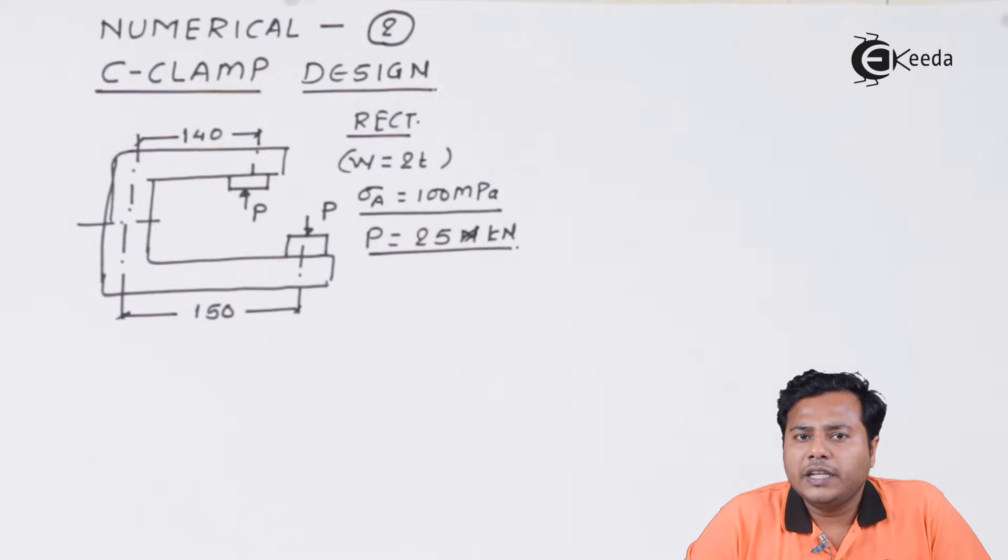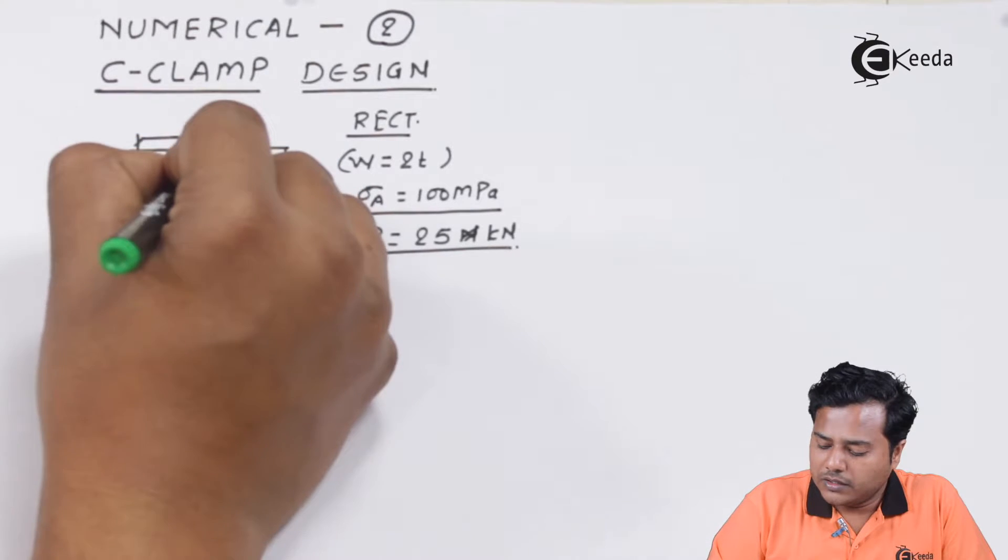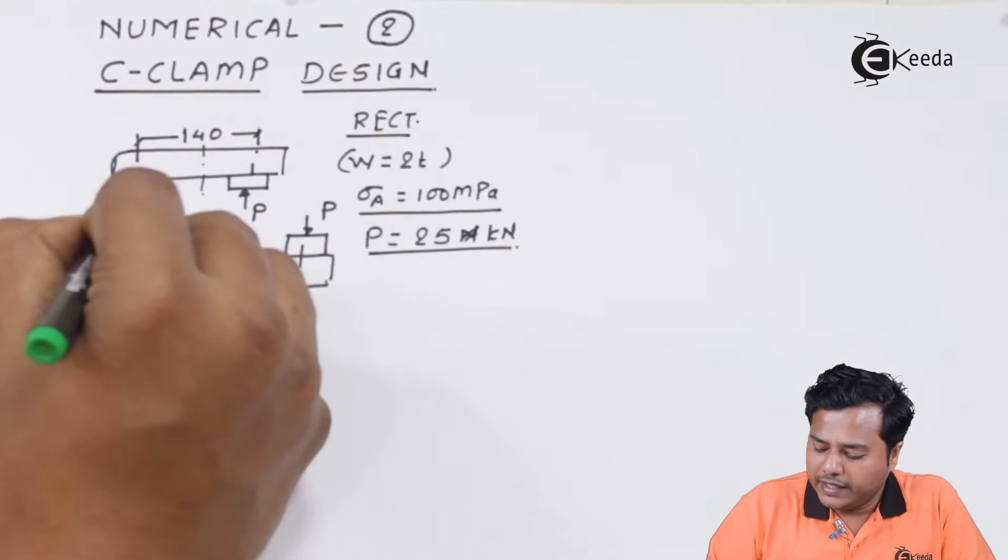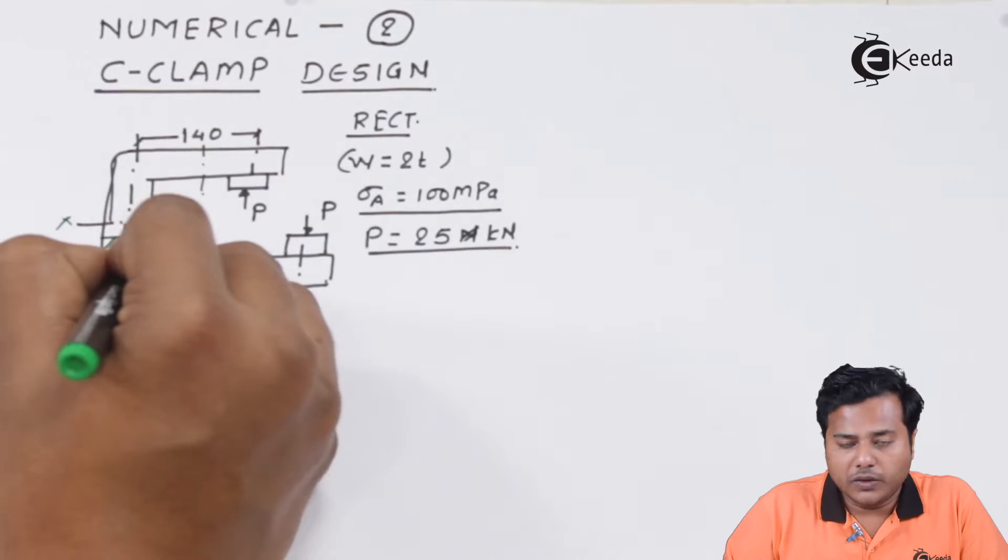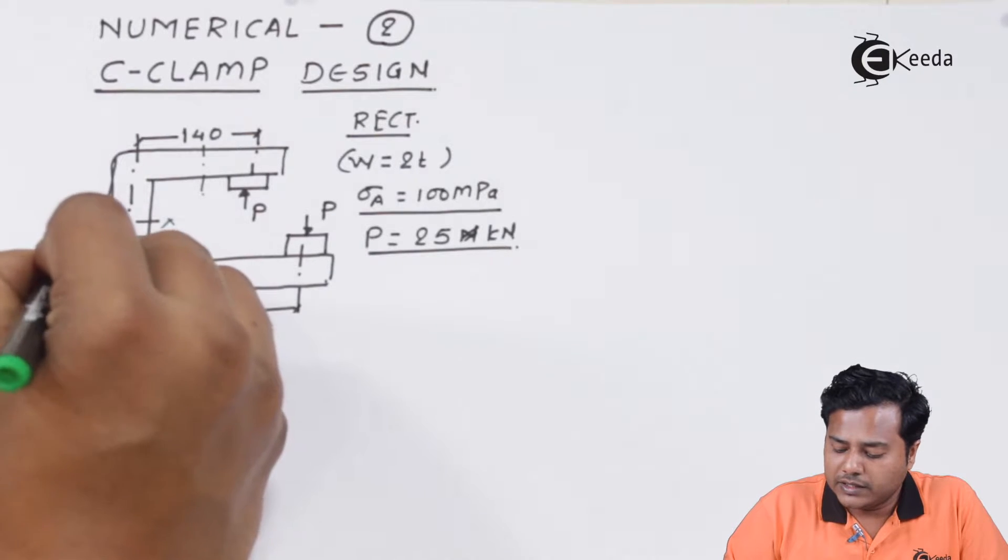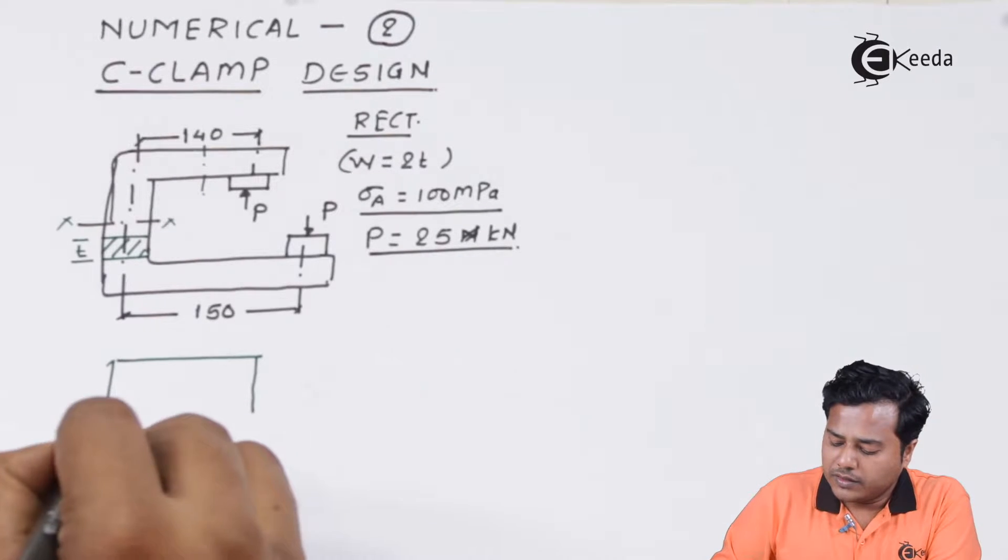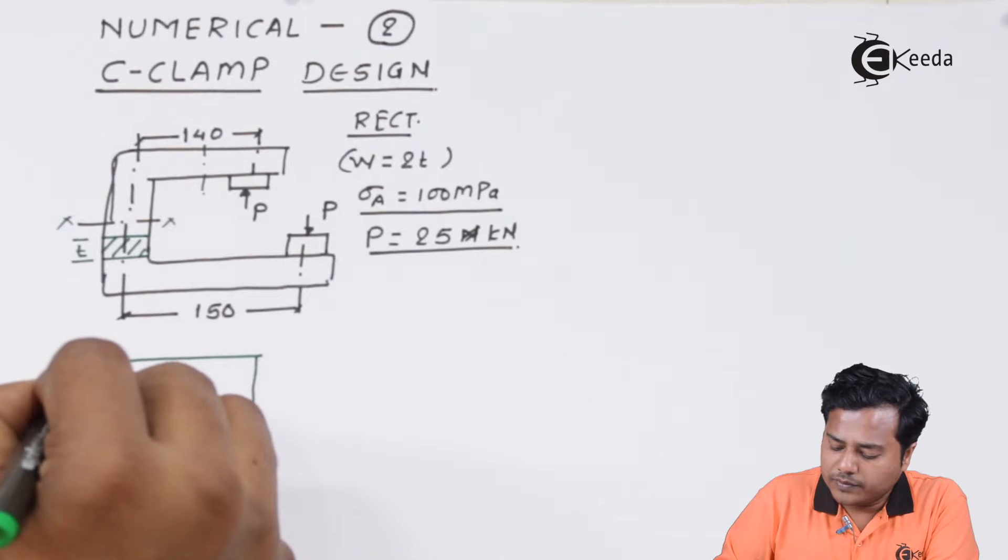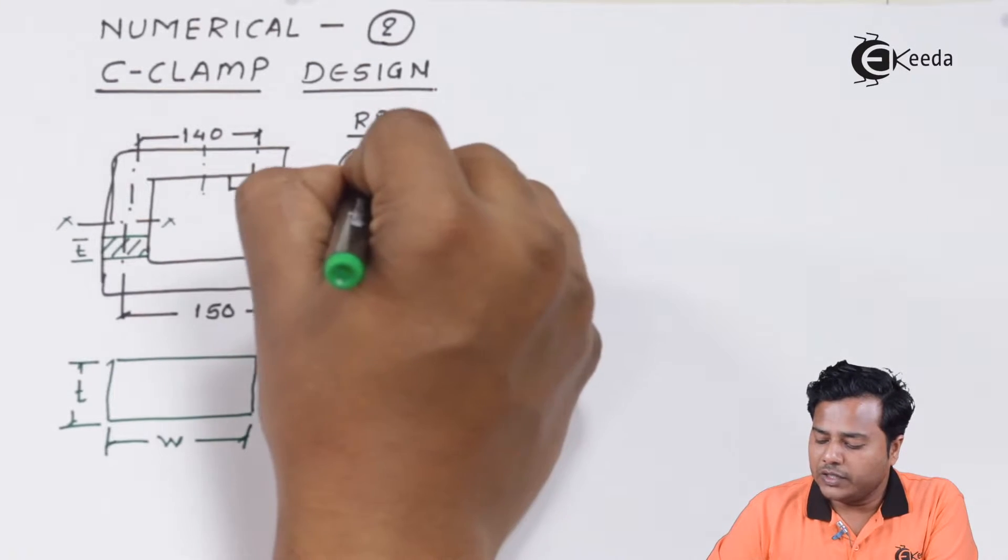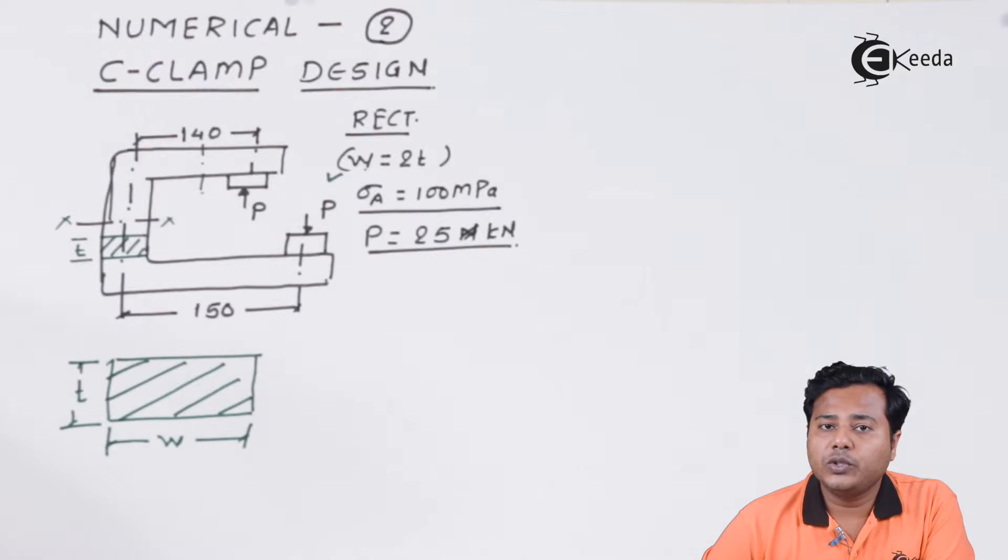Here in the C-clamp dimensions, they have given us the rectangular cross section. If I take a section along anywhere along this C-clamp body, I will get this section where this dimension we call width and this dimension we call thickness. We have been given another relation that the width is actually twice the thickness, so that's the relation we are going to use.